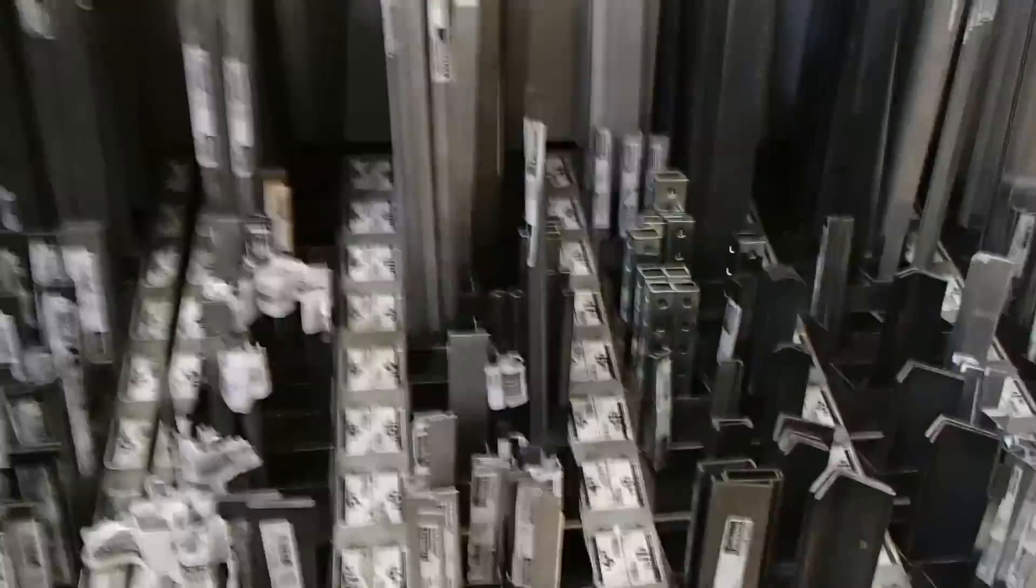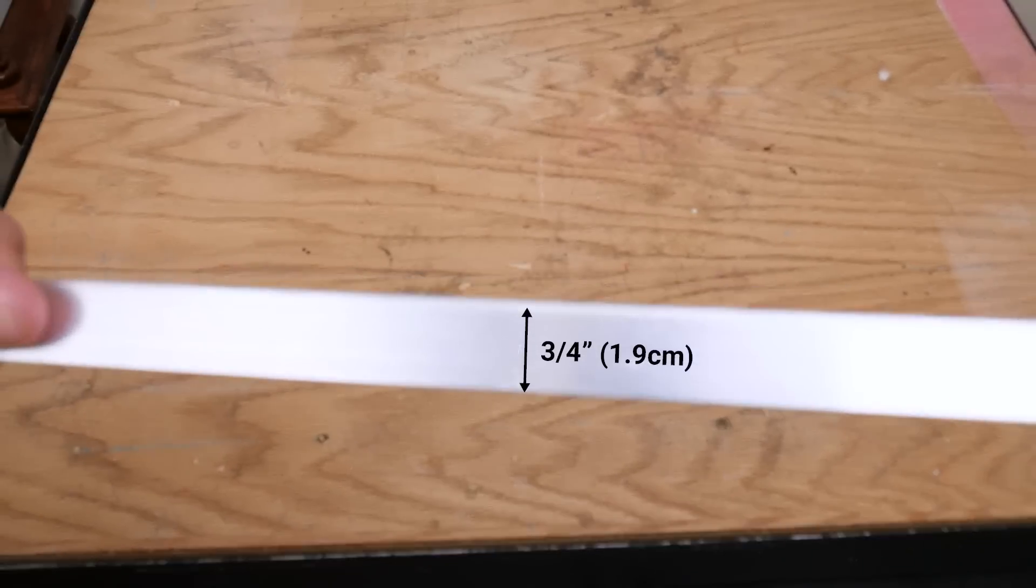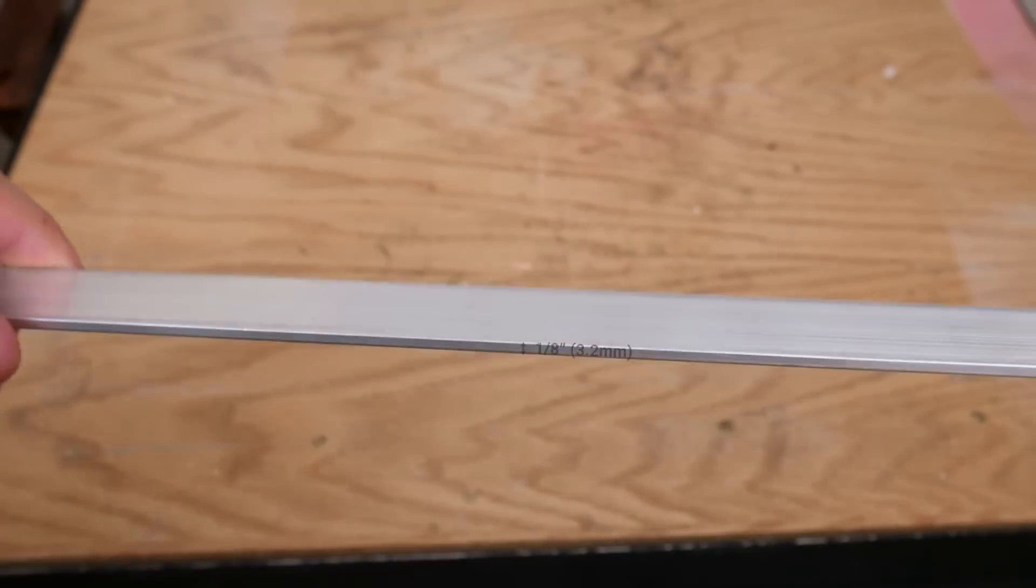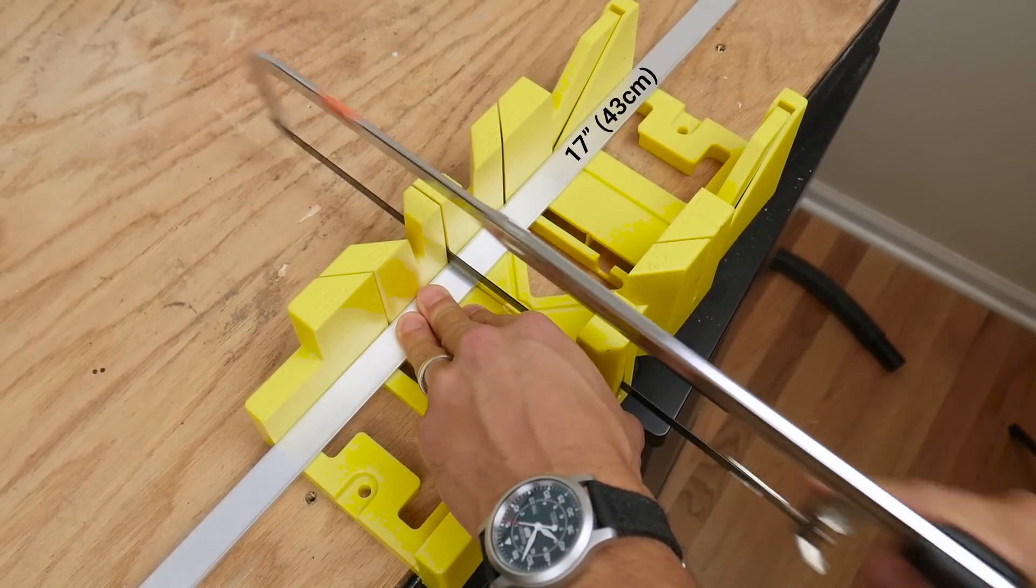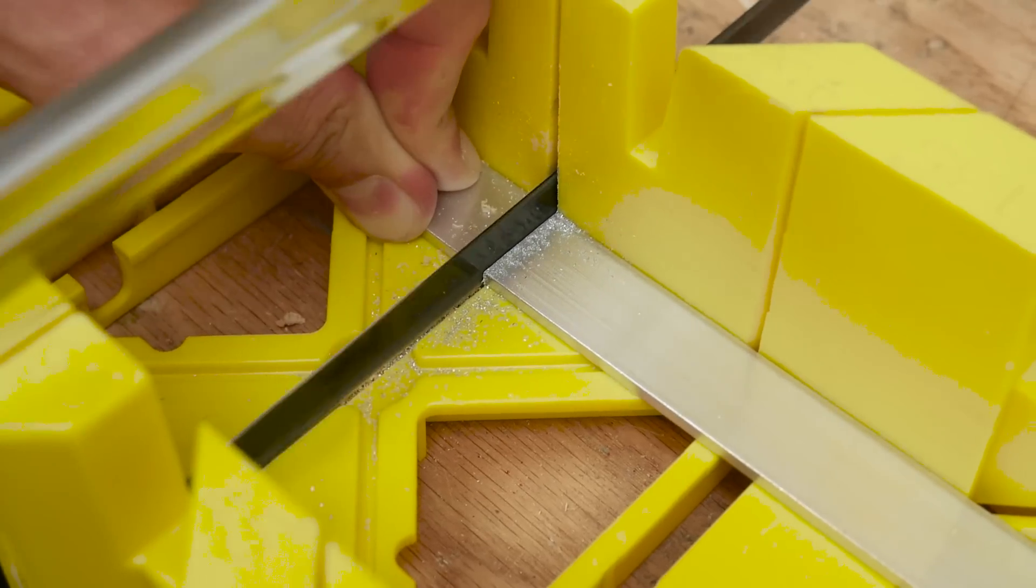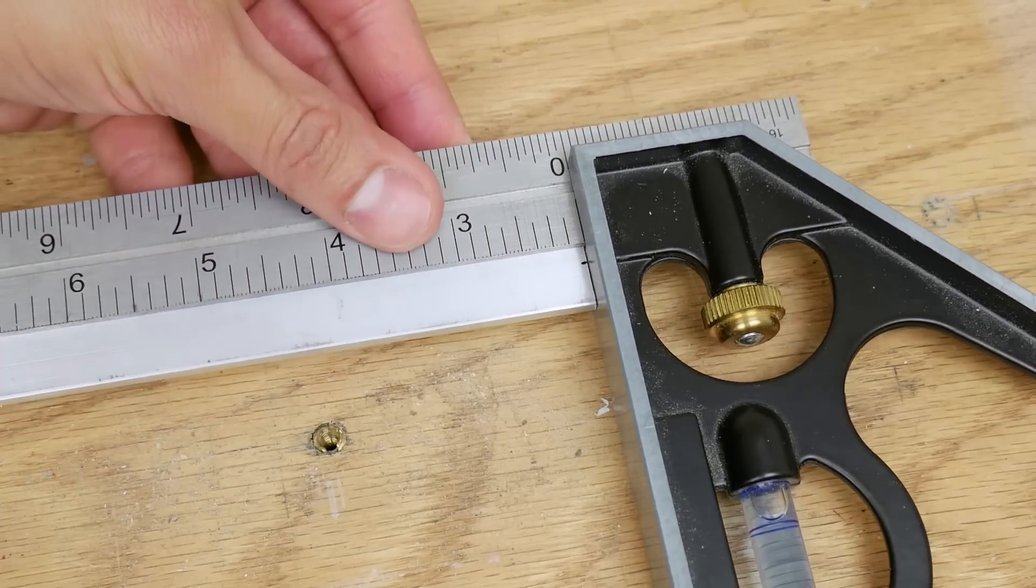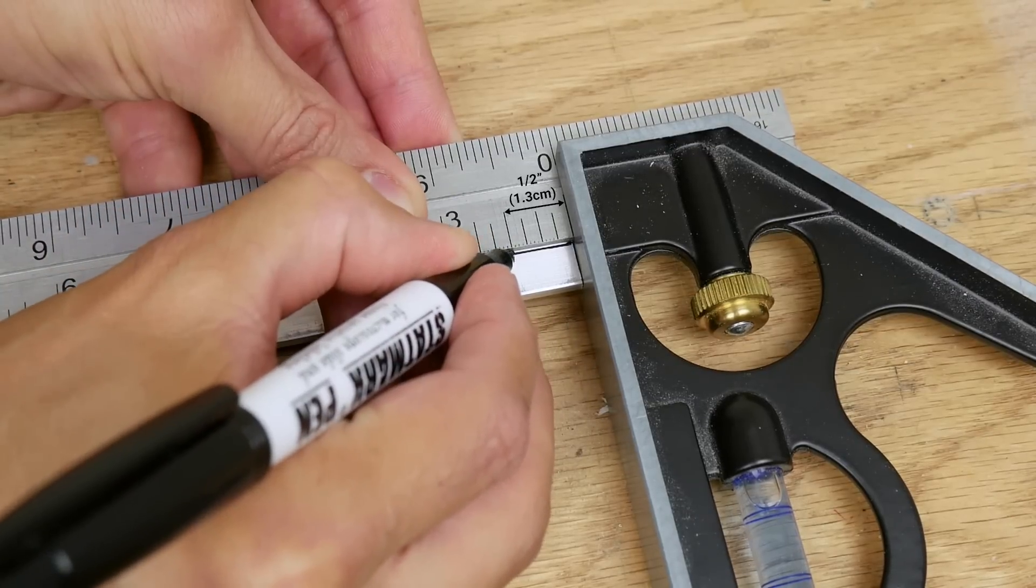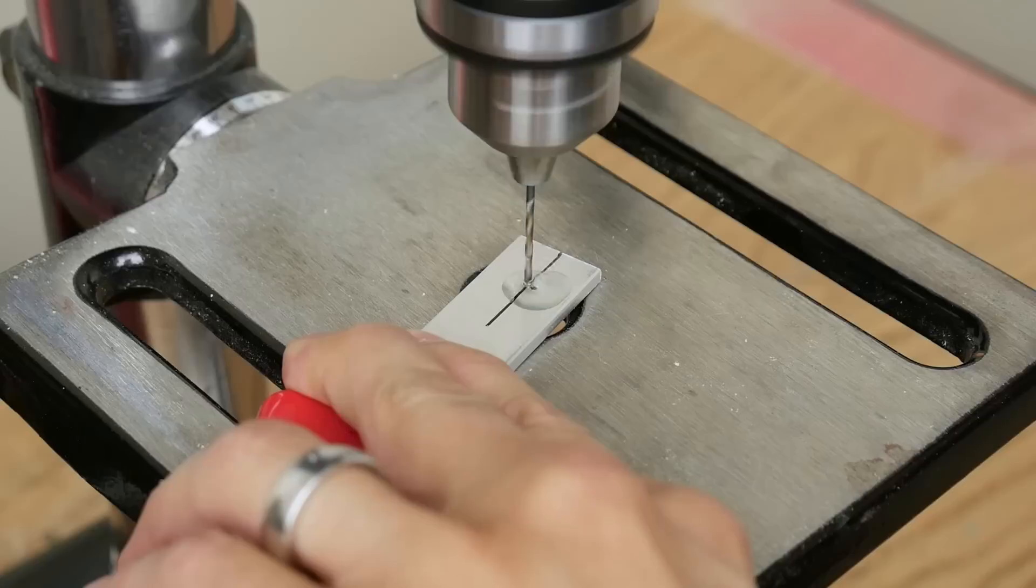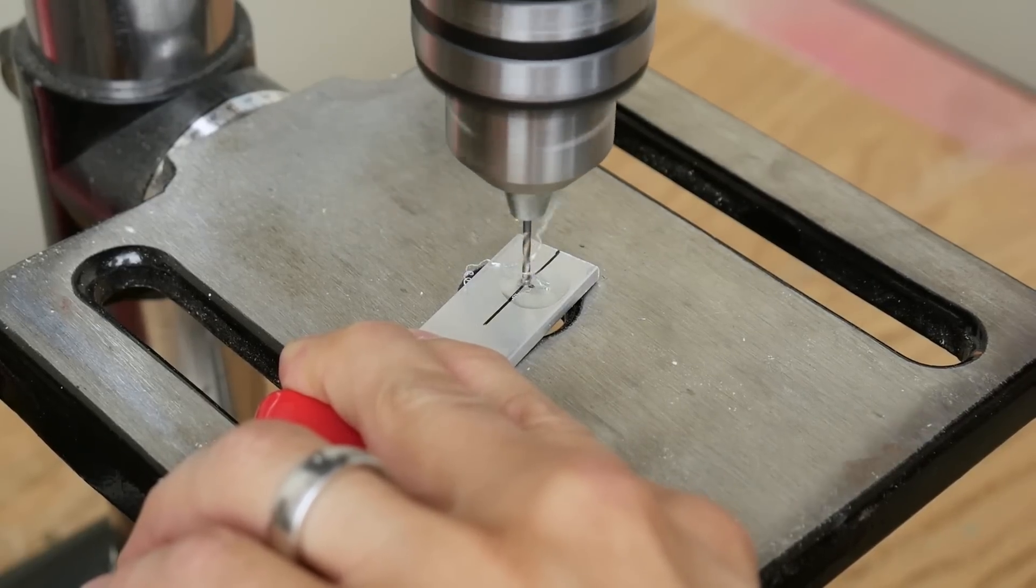I got a piece of aluminum flat bar that was three-quarter inches wide by one-eighth inch thick and cut it with a hacksaw to 17 inches long. I marked spots one-half inch from each end of the bar in the center and drilled one-quarter inch holes at these two spots.